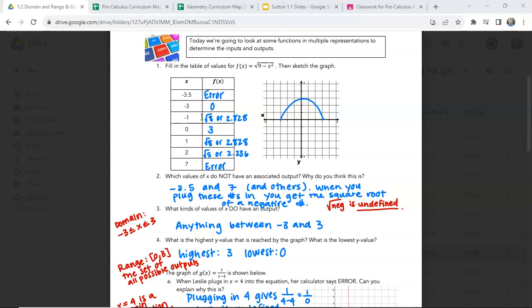Inputting negative 1, you should get root 8. Inputting 0, you should get 3. Inputting 1, root 8, 2 gives root 5, and 7 gives an error.